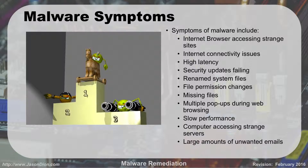Your internet connectivity starts having issues — you can't get online all the time, things come and go, and you have high latency. If you're used to facebook.com popping up immediately but now it takes a few seconds, that can be an indication of malware. What can end up happening is you're actually going through somebody else's proxy server and they're capturing your data, which adds latency. If you're going from here to Russia and then out to Facebook, that's going to take more time than going straight to Facebook.